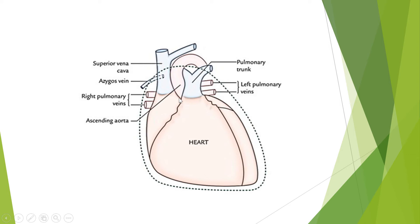The aorta has three parts. The first part coming out from the left ventricle is called the ascending aorta. Then there is the arch of aorta — an arch or bending shape. Then there is the descending thoracic aorta, which goes down on the left side and gives many branches supplying oxygenated blood to the body.